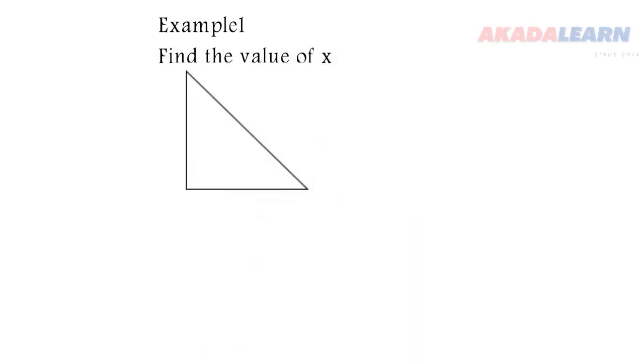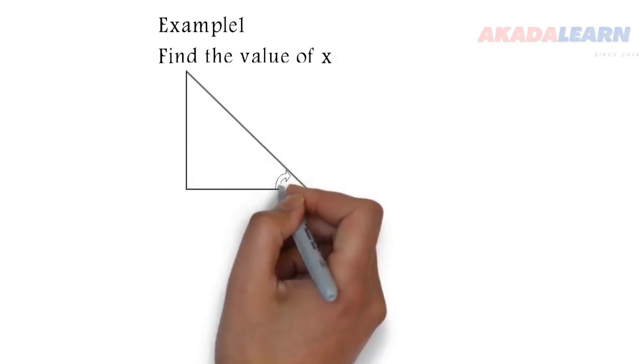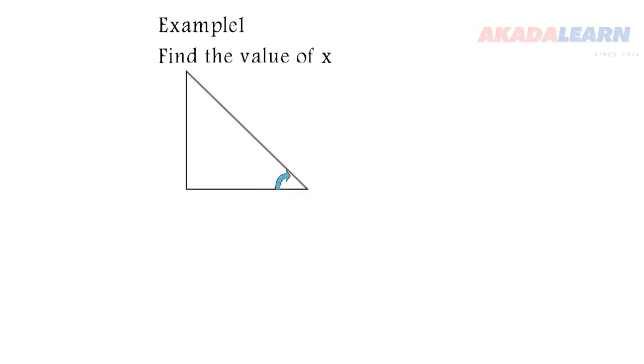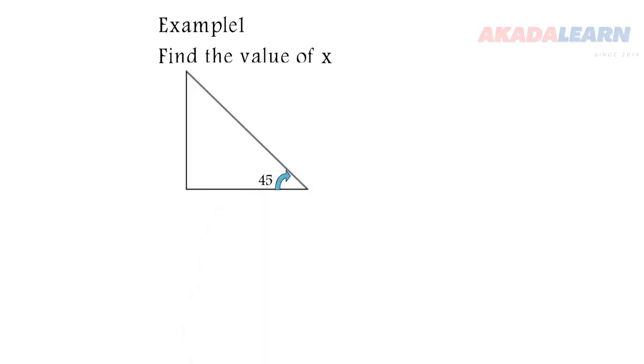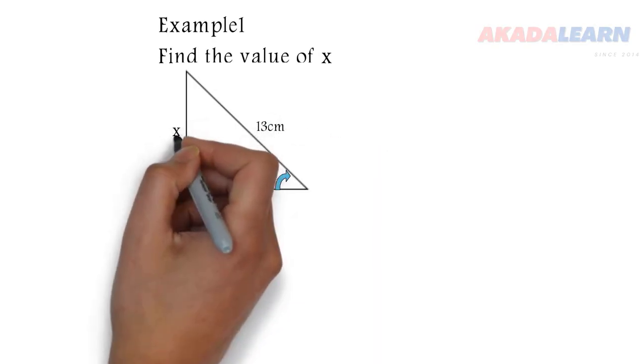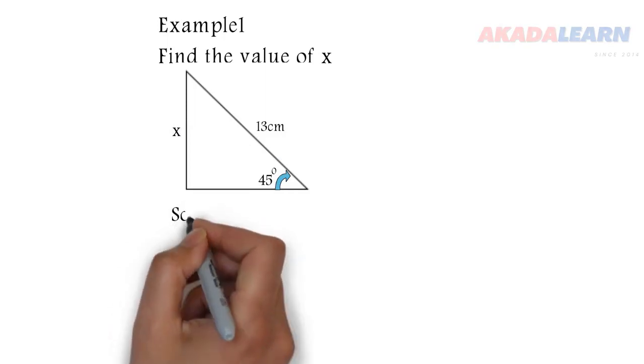We have our right angle triangle. We are given a 45 degree angle between the lines there. We have our hypotenuse to be 13 and we have our opposite to be x, so we are looking for the value of x.